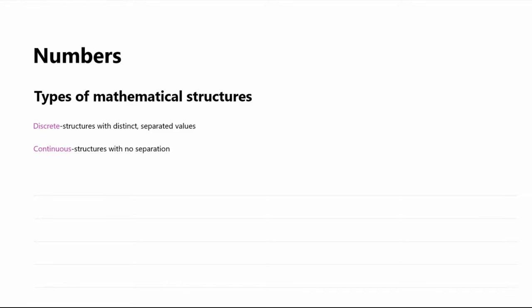When we talk about mathematical structures, we usually refer to two types. The first is a discrete structure — structures with distinct separated values. That usually means there's some sort of tangible gap in between two elements of that type of structure. And then there's continuous structures, structures that don't have any separation.